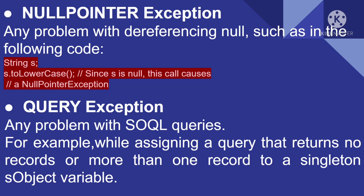Then we have Query Exception. Any problem with SOQL queries will cause a Query Exception. For example, while assigning a query that returns no records or more than one record to a singleton sObject variable. If there are no records returned — perhaps due to an incorrect WHERE clause or a record not present in the org — and we then try to do assignments or updates on that data, this exception will occur.